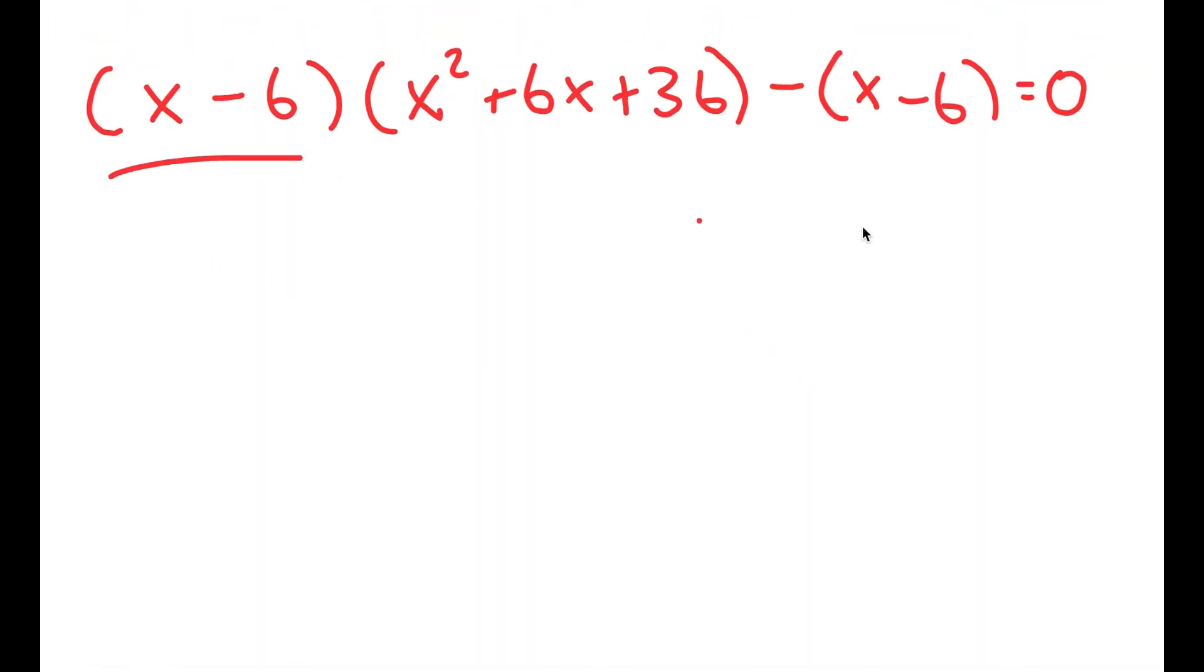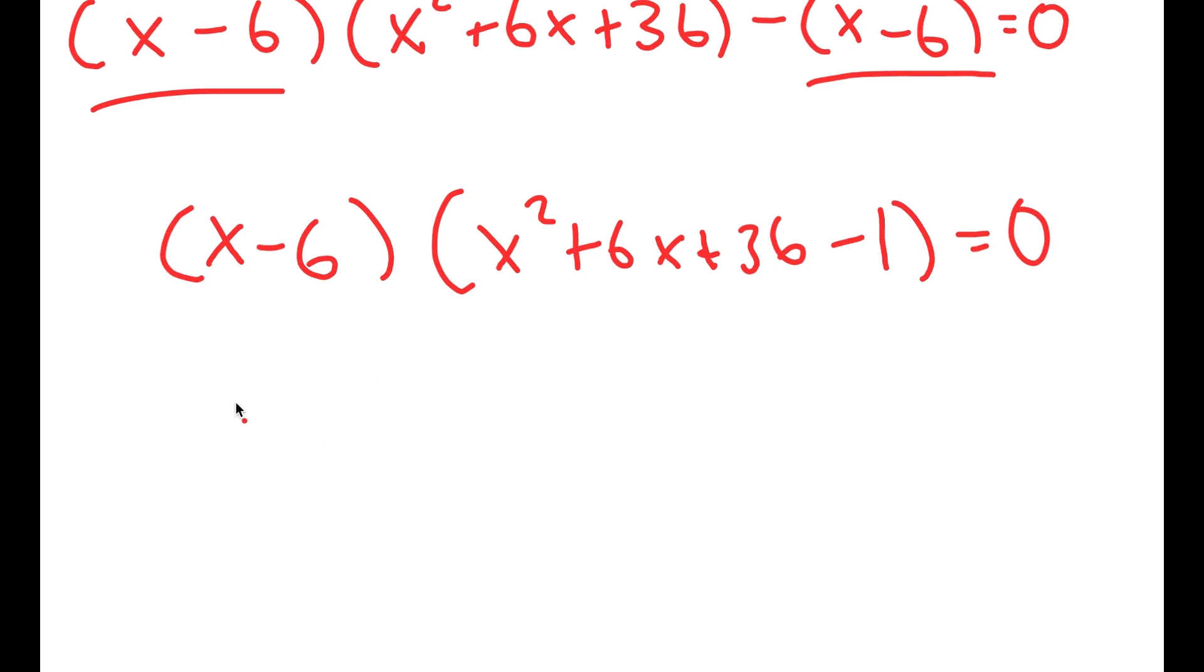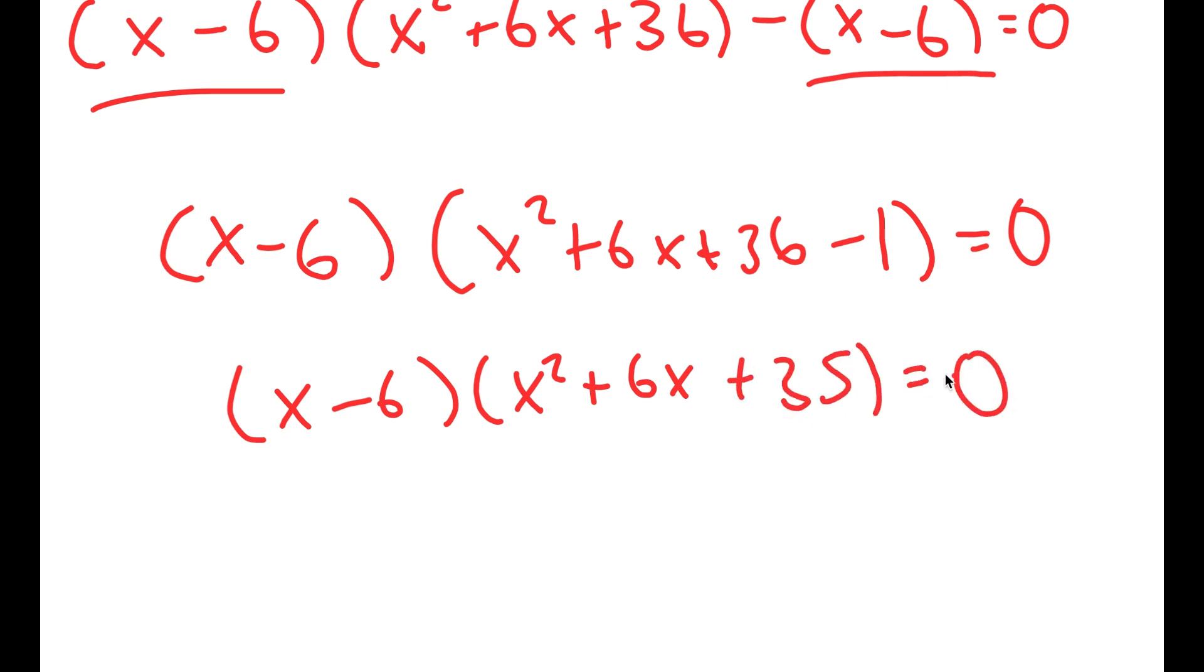So now from here, because both of these terms have x minus 6 in them, I'm going to factor out x minus 6. So I get x minus 6 times x squared plus 6x plus 36 minus 1 is equal to 0. And this turns into x minus 6 times x squared plus 6x plus 35 is equal to 0.